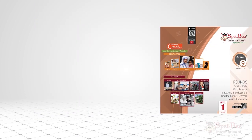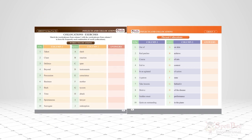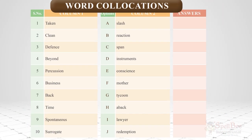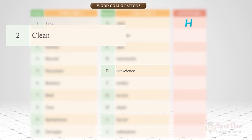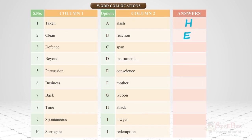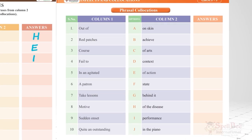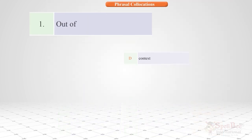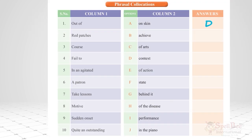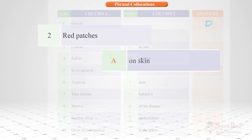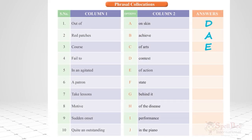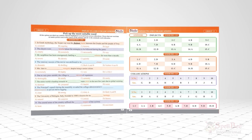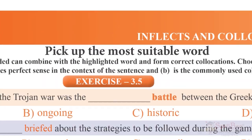For higher groups, there are word collocations such as 'taken aback,' and 'clean' collocates with 'conscience' and 'defense.' 'Loyal' involves only two words. Phrasal collocations involve more than two words — these are used out of context, for example 'red patches on skin' and 'cause of action.'